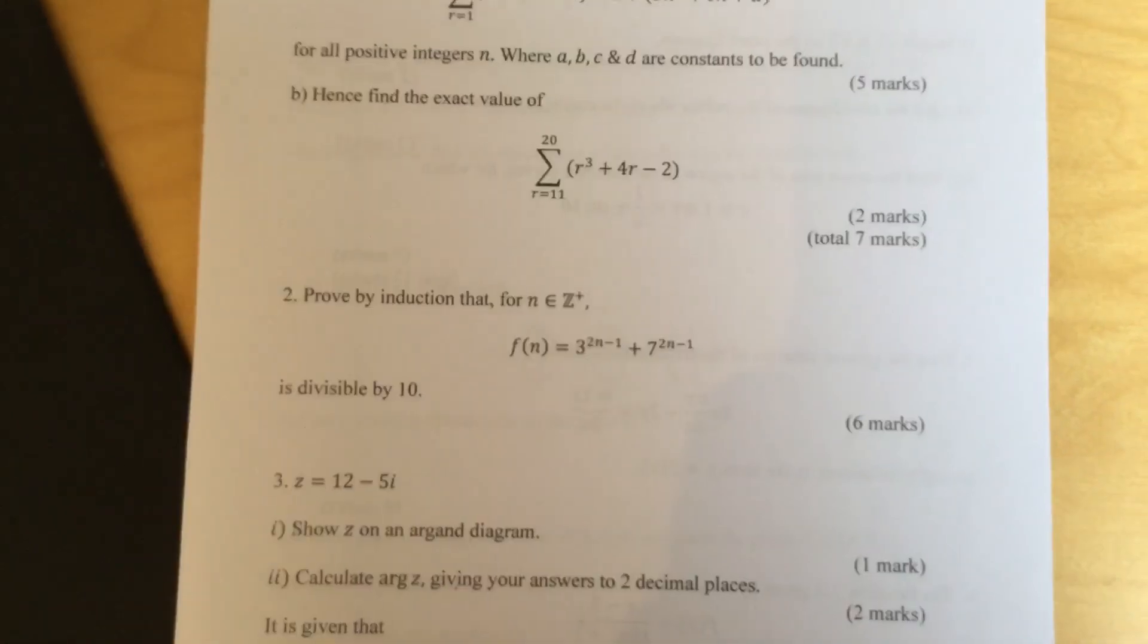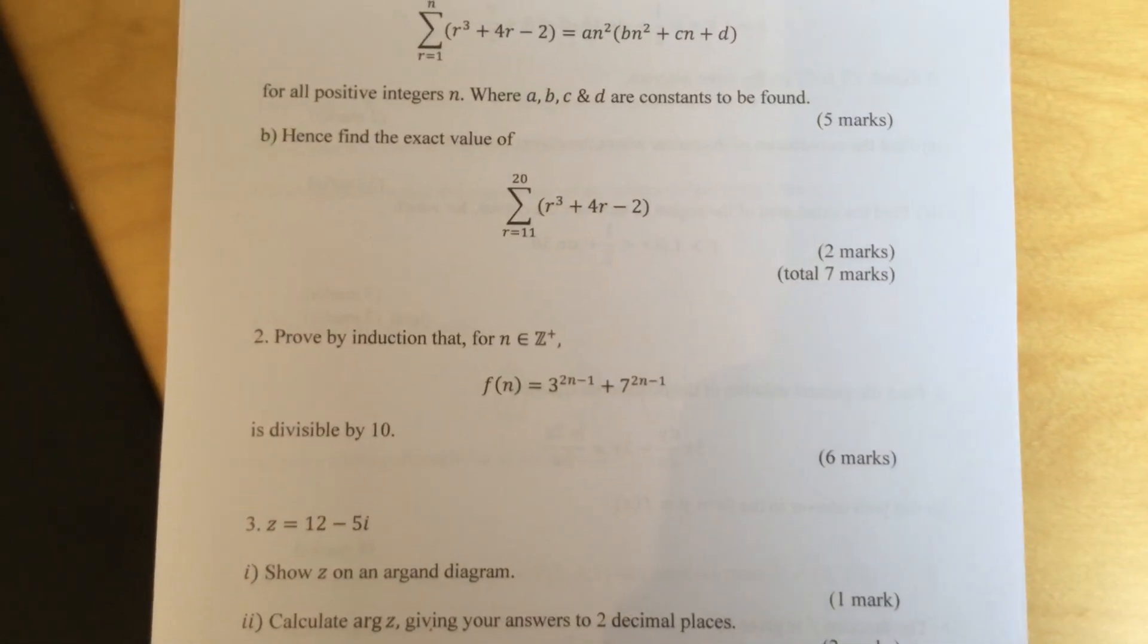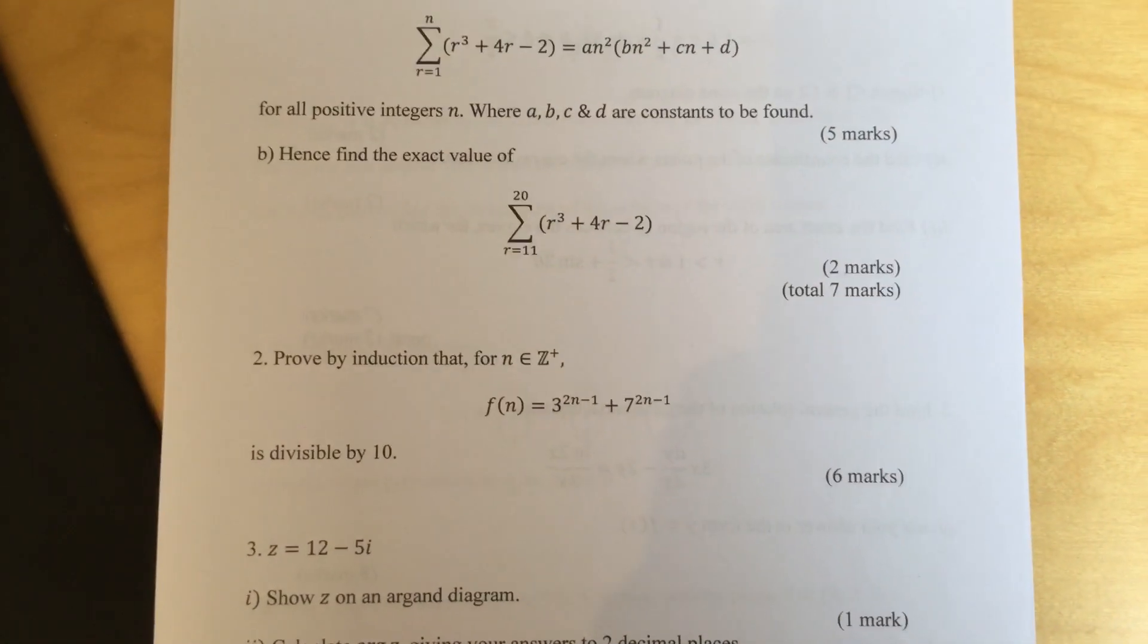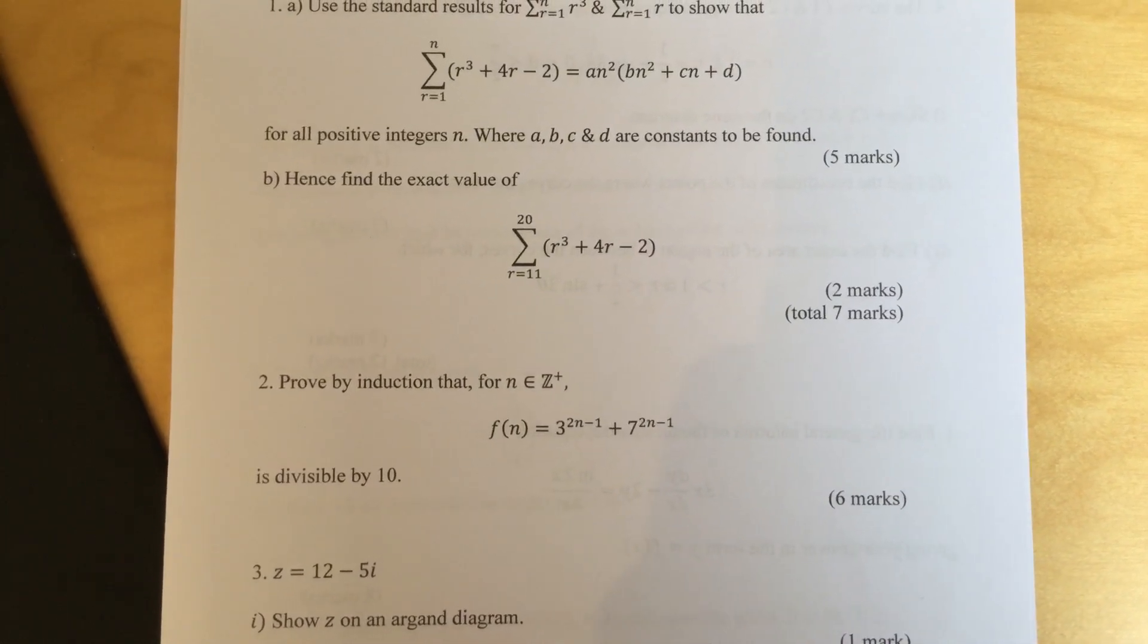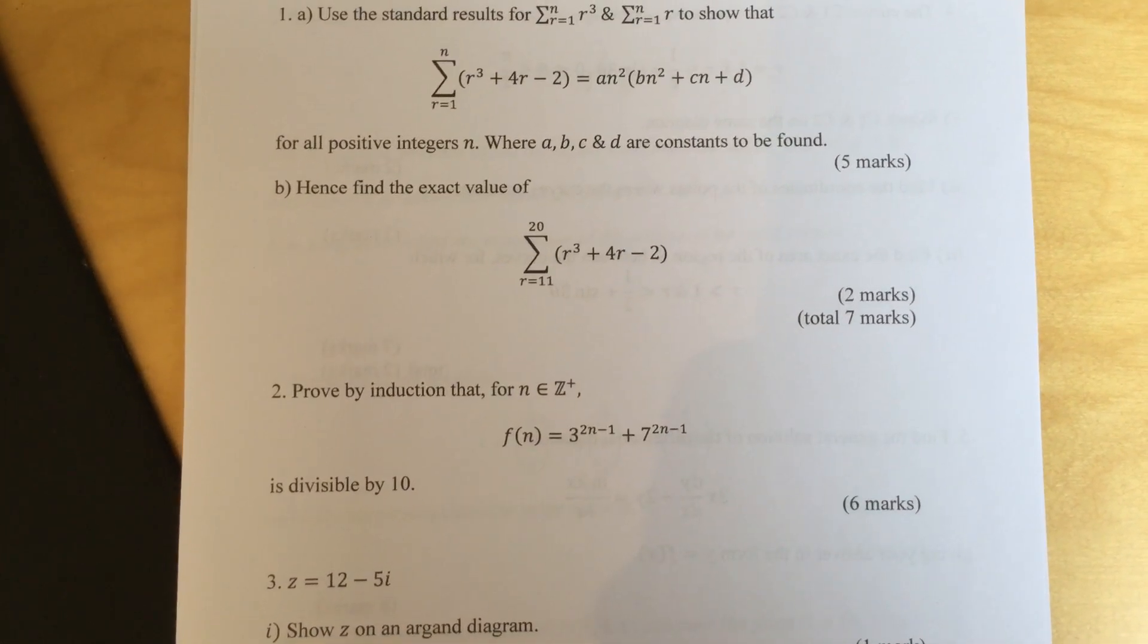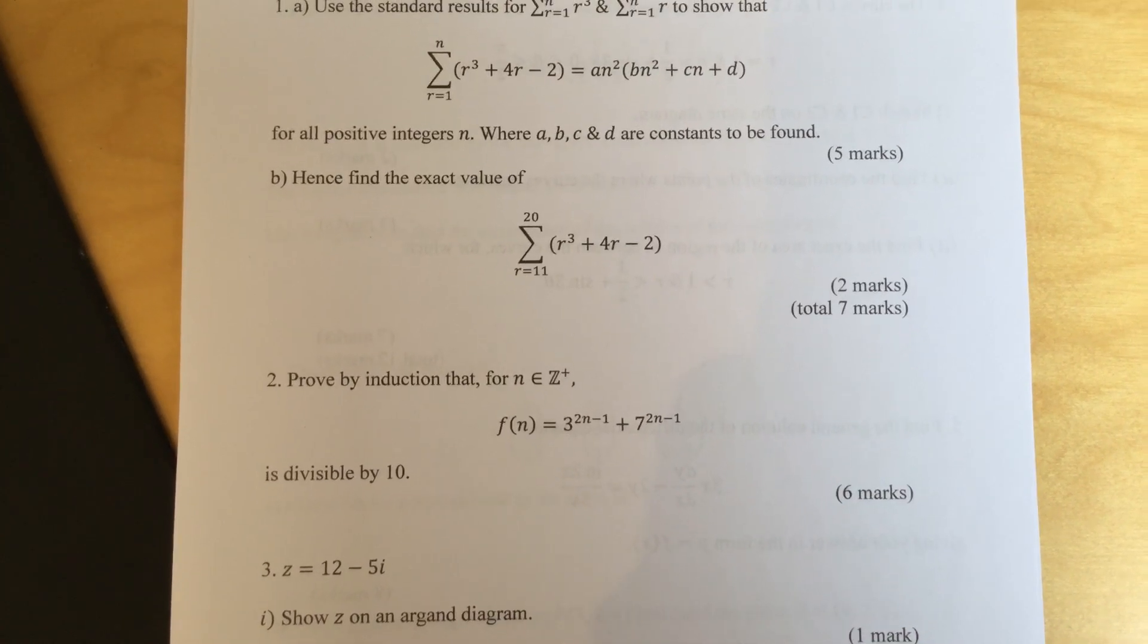Question two. Prove by induction that for all positive integers n, f of n equals 3 to the power of 2n minus 1 plus 7 to the power of 2n minus 1 is divisible by 10.